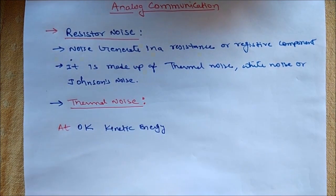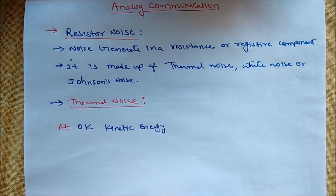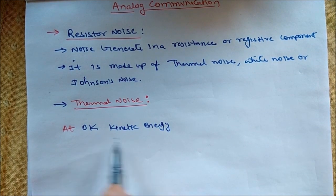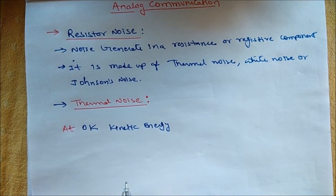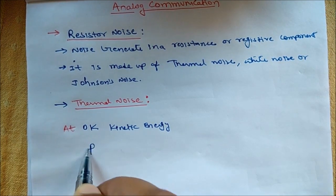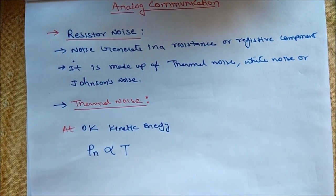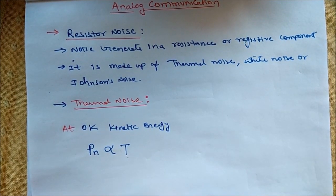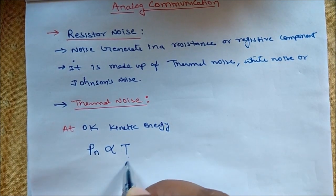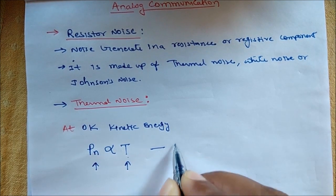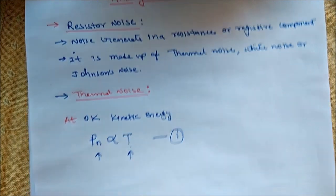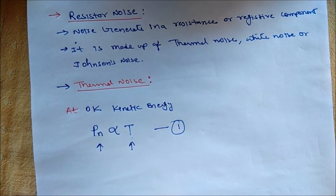At zero Kelvin, the kinetic energy of particles becomes approximately zero, hence motion ceases. So at zero Kelvin there will be no thermal noise. As we move on increasing the temperature, the noise power increases. The noise power is represented by Pn — as we increase temperature T, noise power also increases. Let's mark that as equation number one.